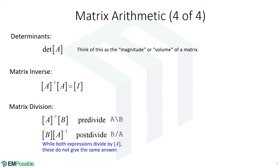Matrix division. There are two types in MATLAB. We can pre-divide: this is A pre-dividing B, written as A backslash B. In the second case, we post-divide by matrix A, written as B forward-slash A. Don't mix these two — they give different answers. In both cases we're dividing by A, but in the first case we're pre-dividing and in the second we're post-dividing, so they're not equal.